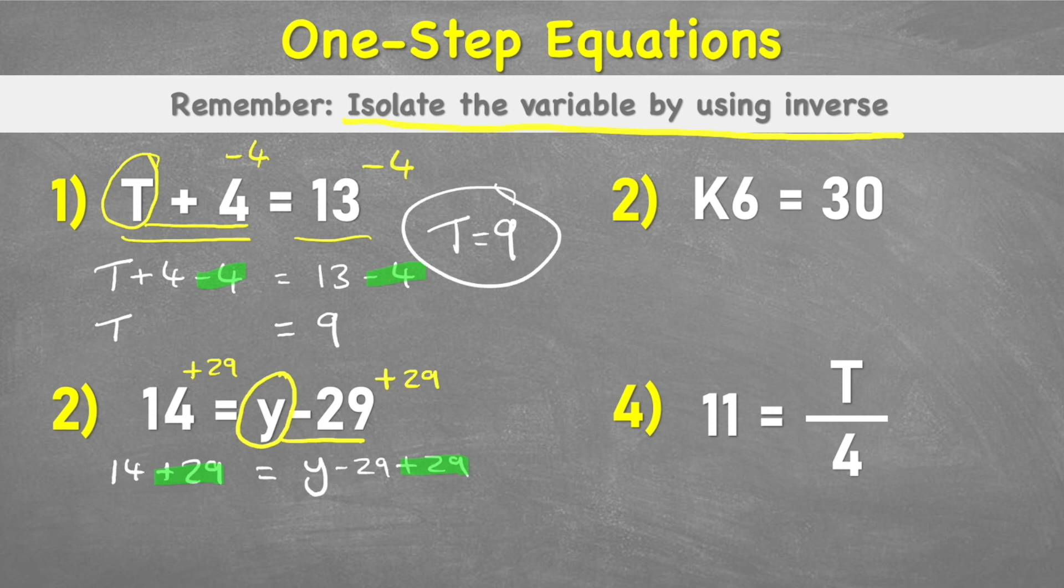Now I can just simply solve, and fourteen plus twenty-nine is forty-three equals Y, because the minus twenty-nine and the plus twenty-nine cancel each other out. So forty-three equals Y, and therefore Y equals forty-three.